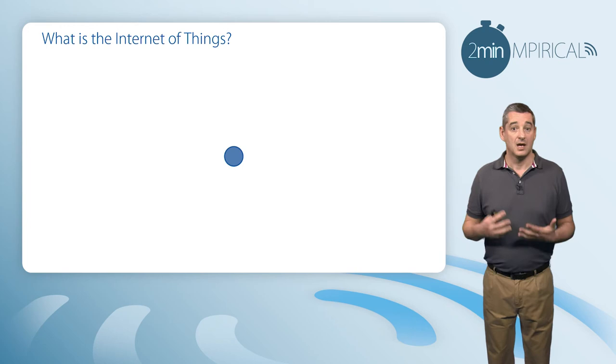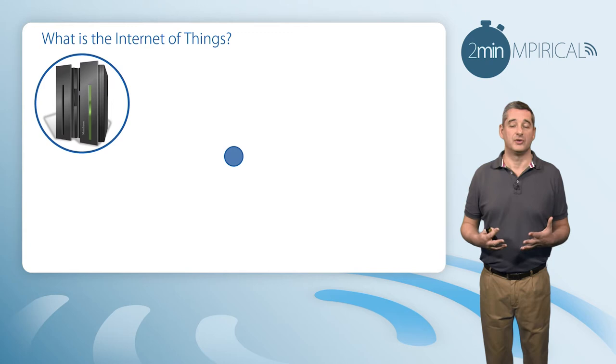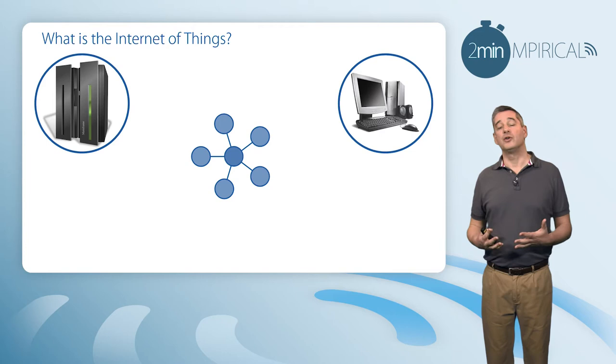So what is the Internet of Things? Historically, our computer networks were comprised of large computers sitting in rooms, only controlled by engineers in white coats. It wasn't really until the latter part of the 80s and into the 90s that we saw the personal computer dropping onto our desk.